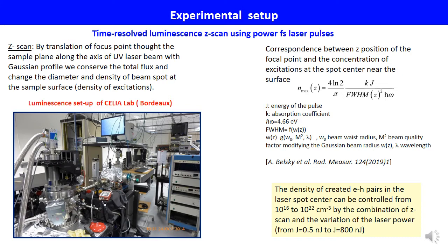By translation of the focal point through the sample plane along the axis of the UV laser beam with a Gaussian profile, we conserve the total flux and change the diameter and density of the beam spot at the sample surface, thereby changing the density of excitation.